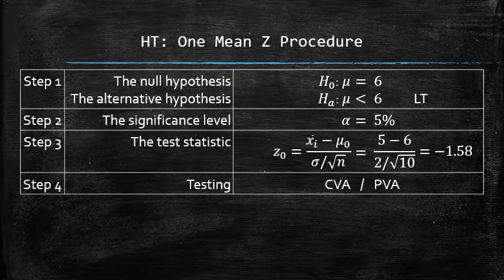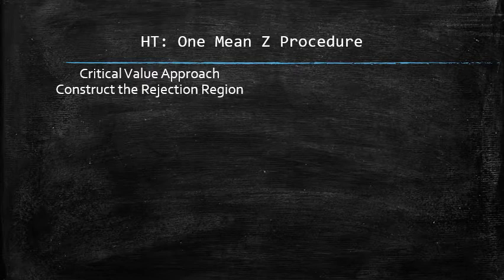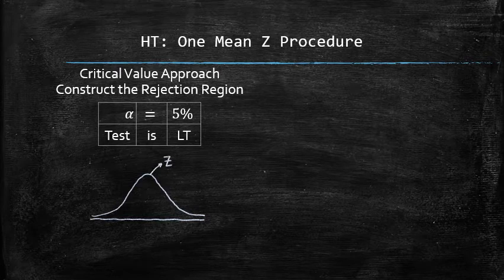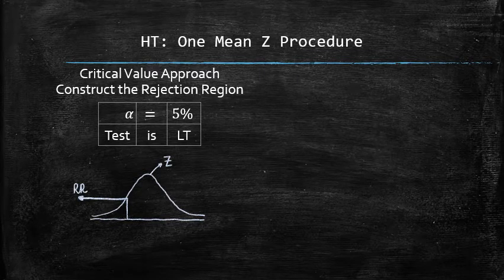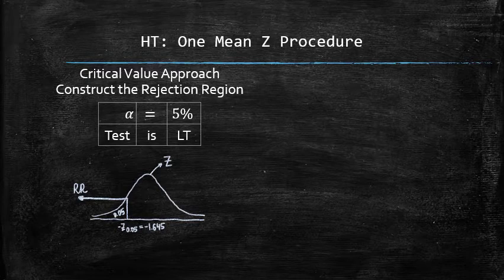Next, we will test the hypothesis using two different approaches: the critical value and the p-value. In the critical value approach, we construct the rejection region. We need to know the significance level alpha and the type of the test. We draw the rejection region under the standard normal probability density curve. A left-tail test has the rejection region in the left tail, with area equal to the significance level 5%. So the right boundary is the critical value negative z₀.₀₅, which is equal to negative 1.645. The entire rejection region is the values to the left of negative 1.645.